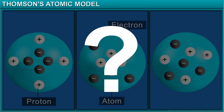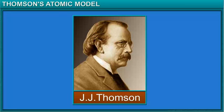They tried to understand this arrangement through various experiments. J.J. Thomson was the first to put forward a model to explain the structure of an atom.